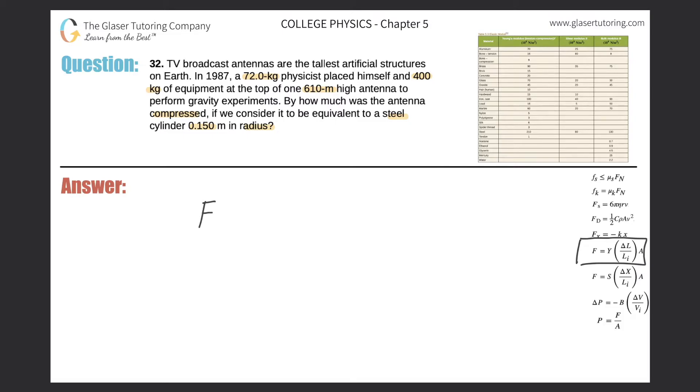This says that the force of compression or tension, because Young's modulus deals with both, is equal to the Young's modulus constant multiplied by the change in length of the object divided by the initial length of the object multiplied by the cross-sectional area of the object.